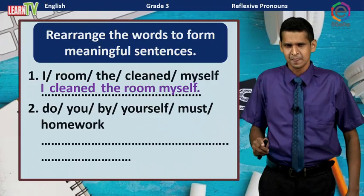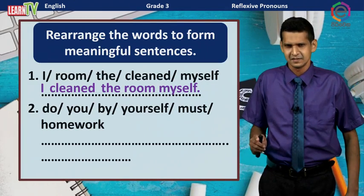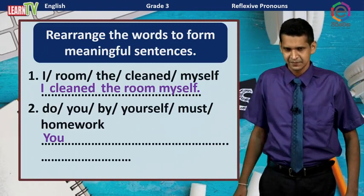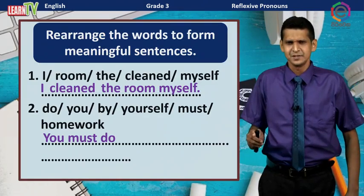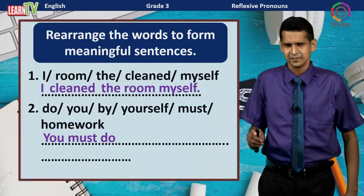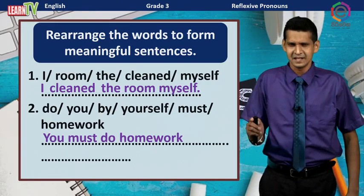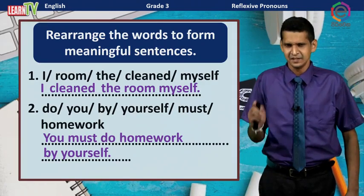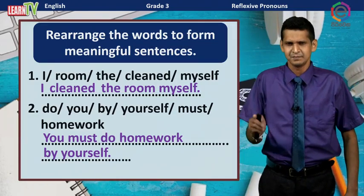Number two: The subject is 'you,' the verb is 'must do,' and the object is 'homework.' That means done alone, without the help of others. The sentence is: You must do homework by yourself.